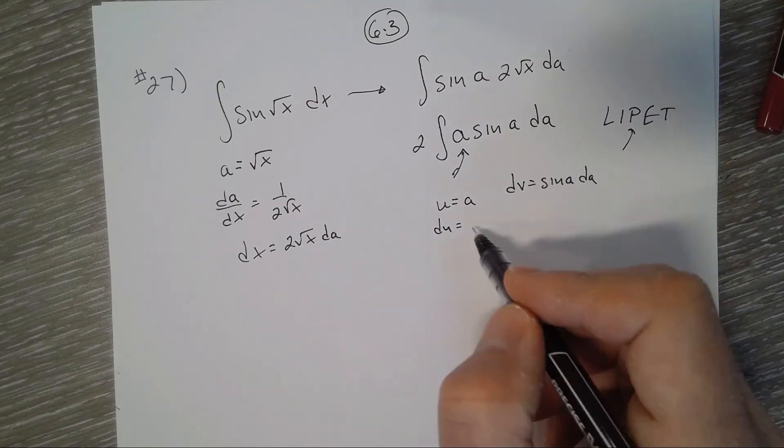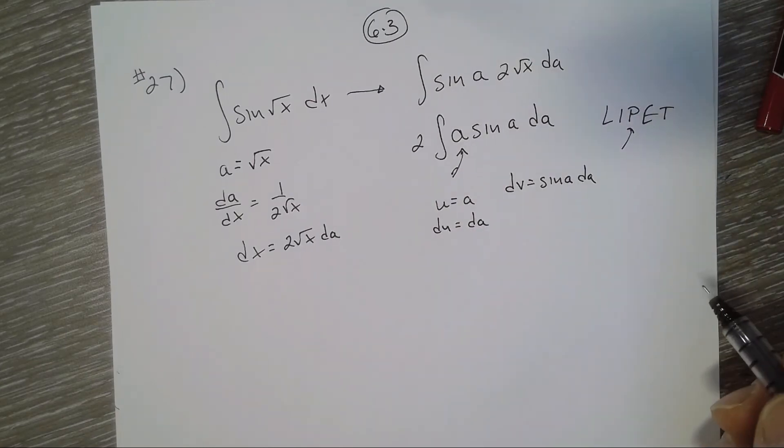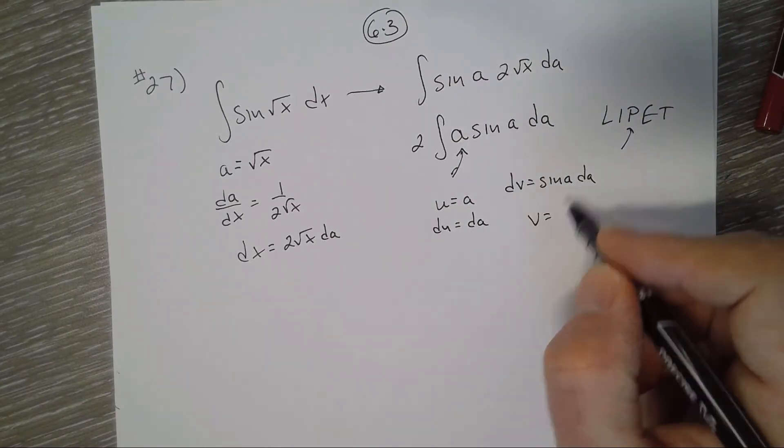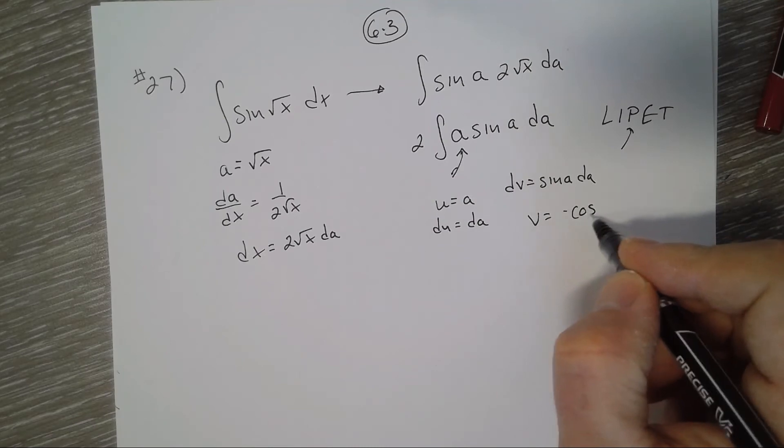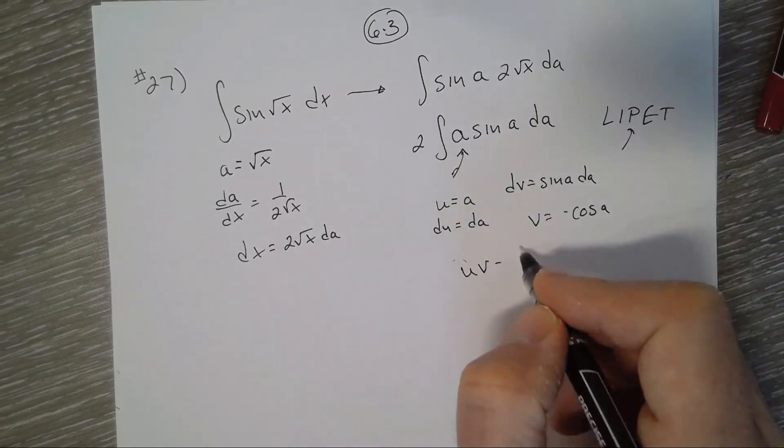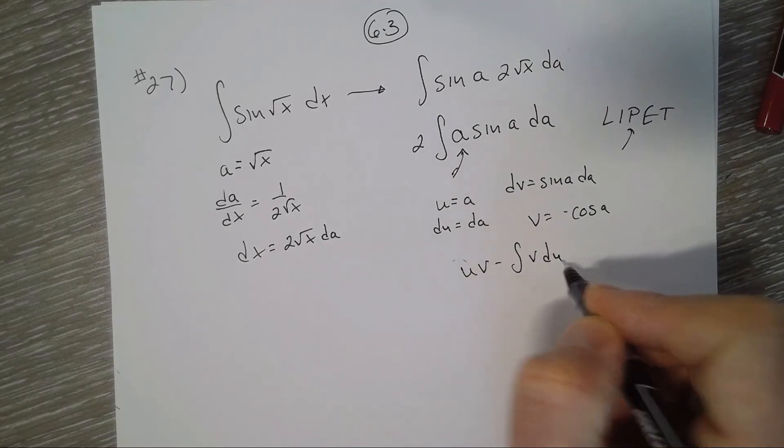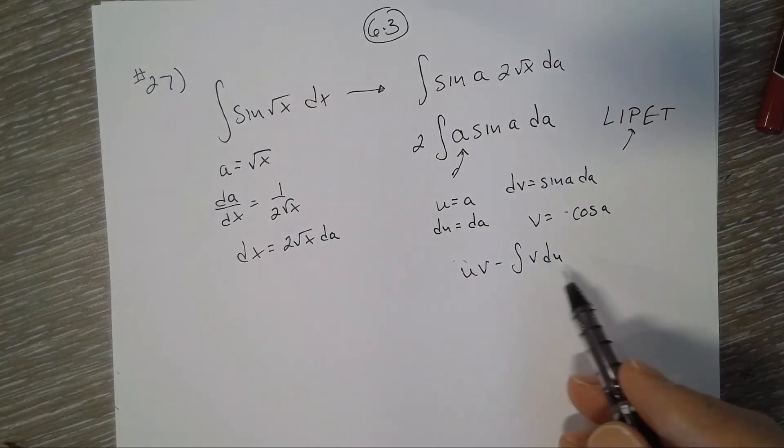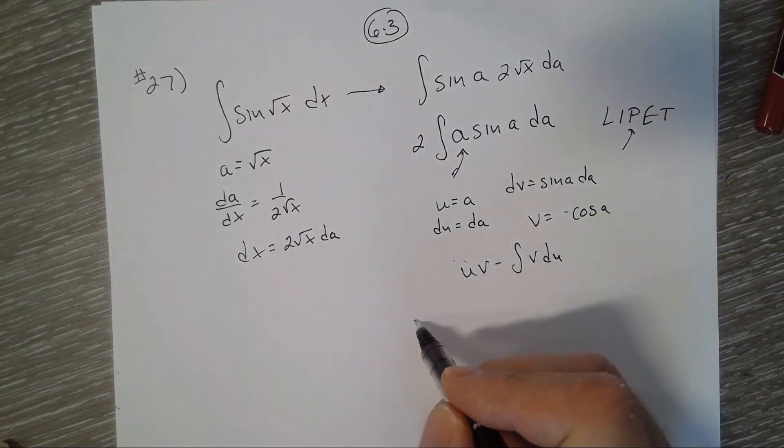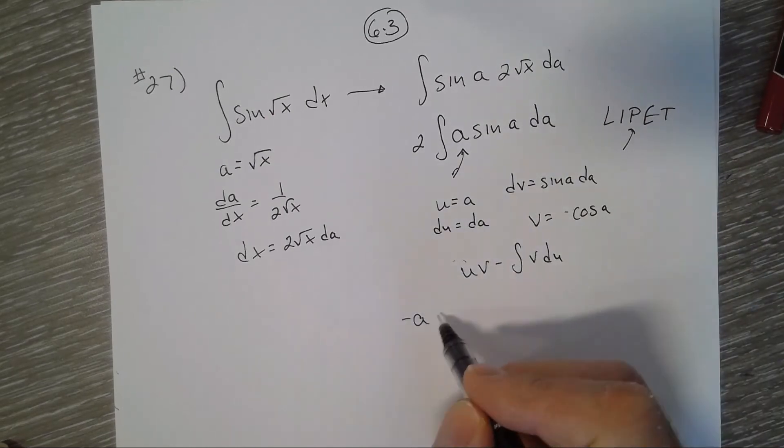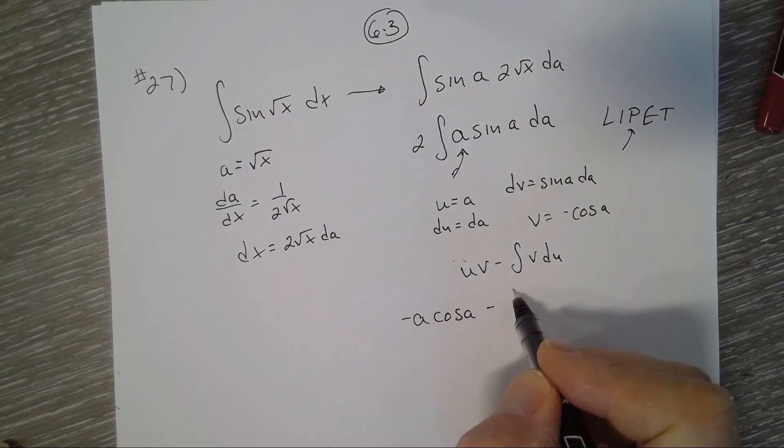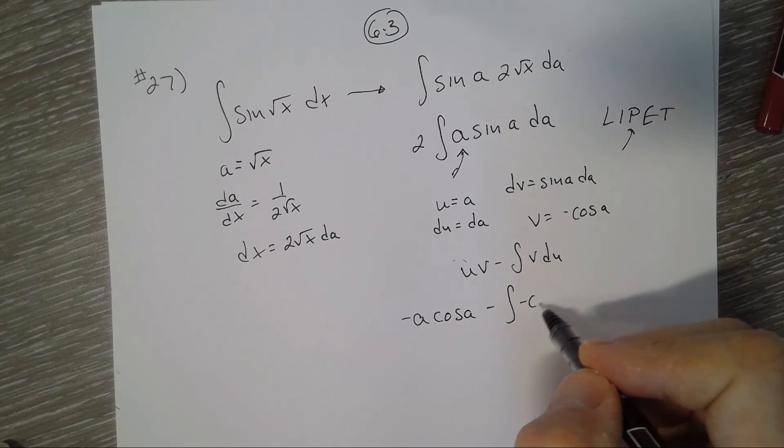So integration by parts is u v minus integral of v du. So u v minus integral of v du.